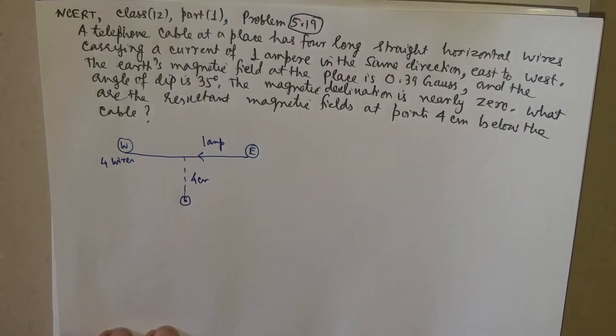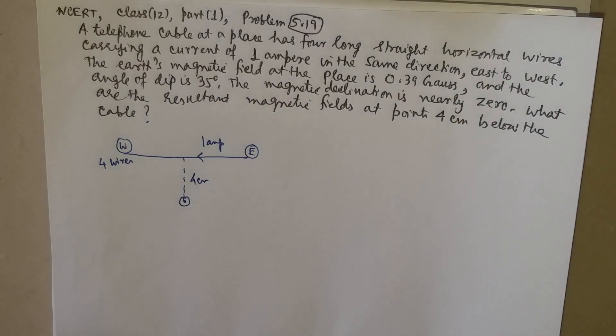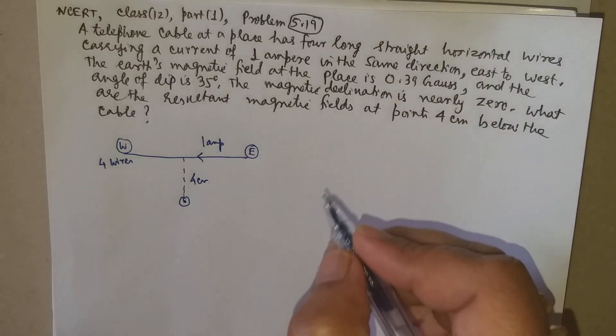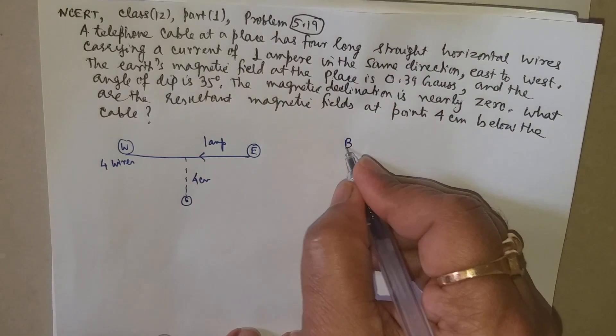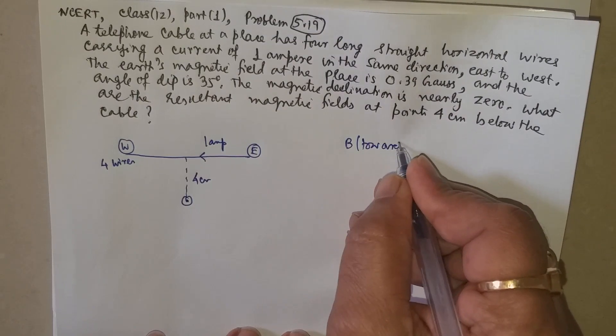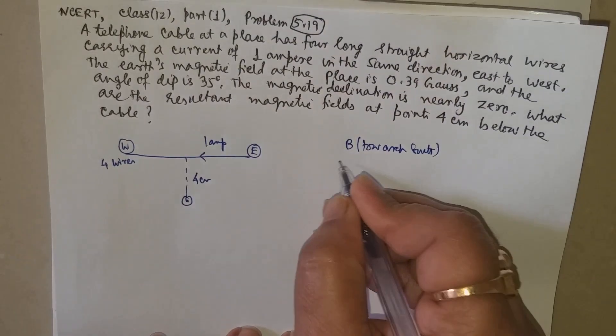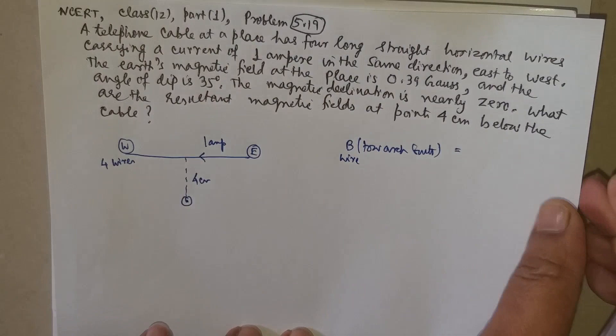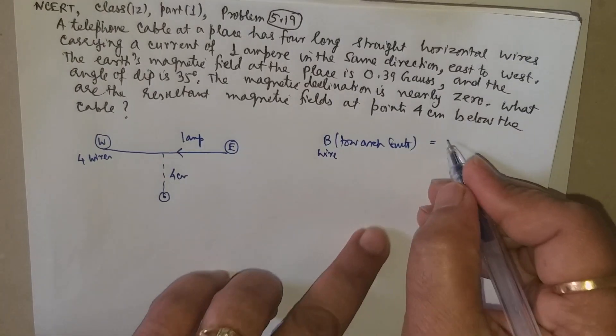First of all, the direction of the magnetic field we can say will be towards the south. So magnetic field towards south due to the wire will be—let's remember there are four wires.